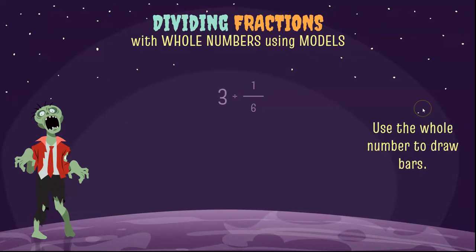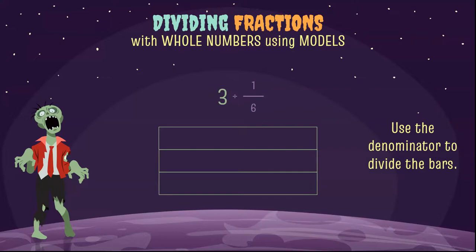Well the first thing we're going to do is we're going to use the whole number to draw bars. Since the whole number is written first we're going to draw three bars. Next we're going to use the denominator to divide the bars. So our denominator is six, therefore we're going to cut each bar into sixths.